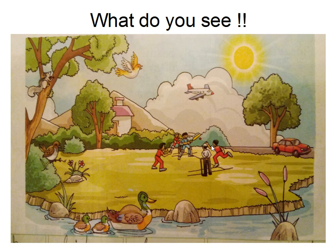What do you see in this picture? You can see a few children playing. They are playing on the ground. You can see them having a bat, ball and stumps. They are playing cricket.